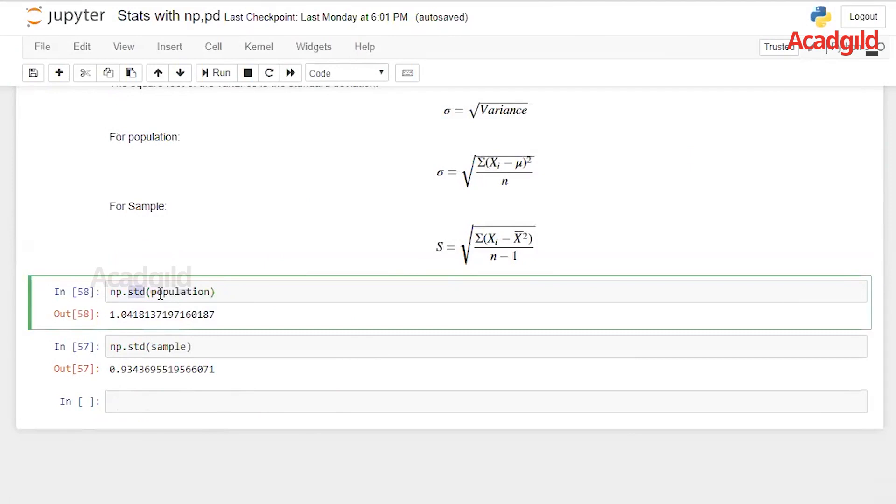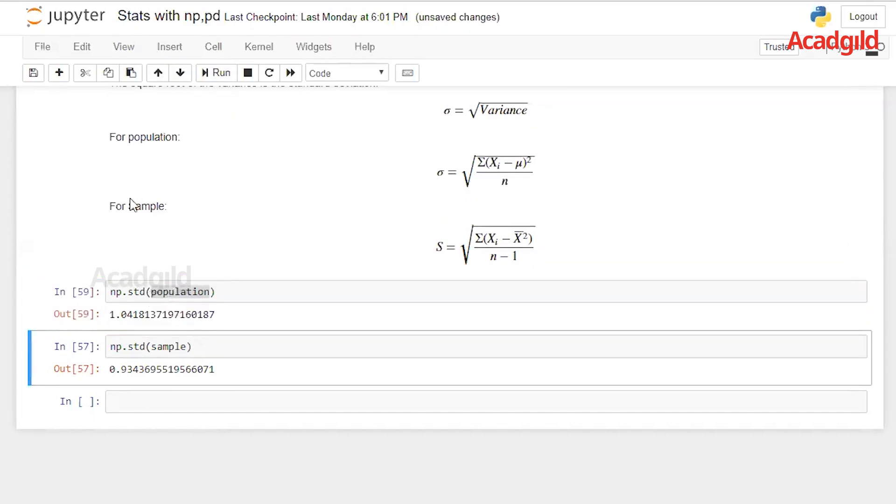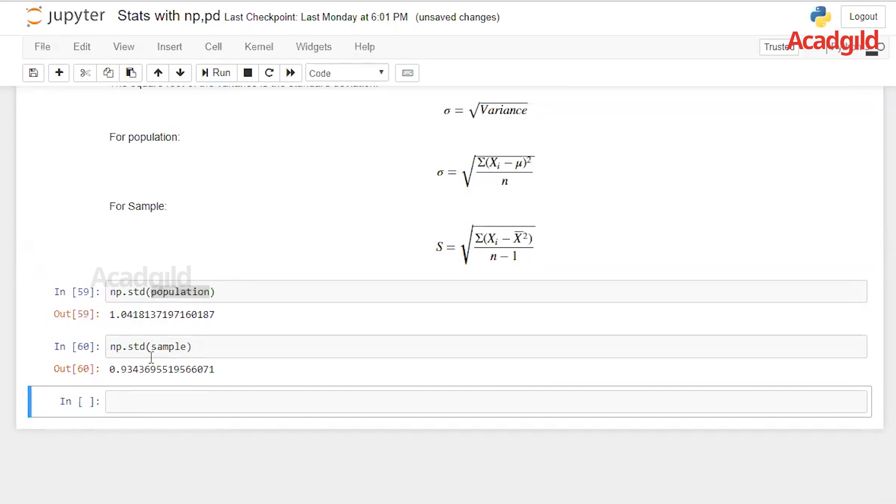NumPy has a standard deviation module under it, which is called STD. Please go ahead and type in your list or the population or your data set. For our list, let us calculate the standard deviation. We will do the same for the sample as well. As you can see, the standard deviation is almost pretty close to sample and population.